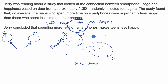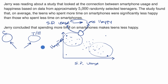In an observational study, you can really just say there's an association — you wouldn't be able to say there is causality. So Jerry is not making a valid conclusion. It's an observational study; we've only established an association, not causality.